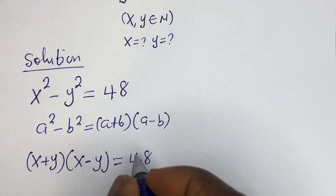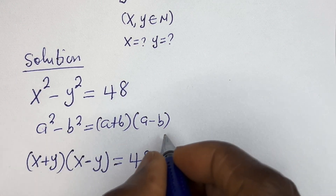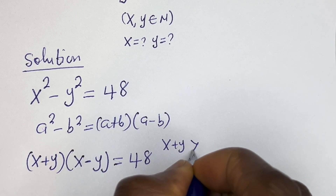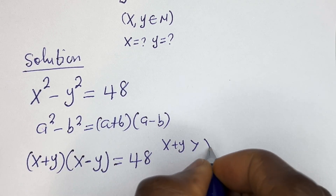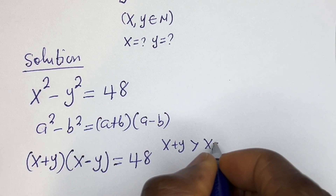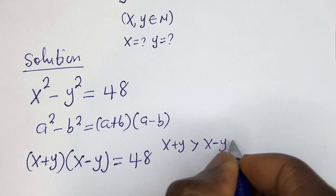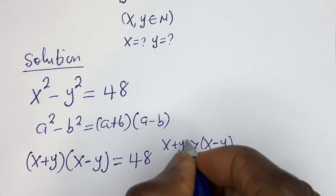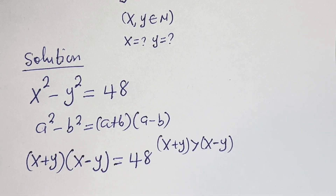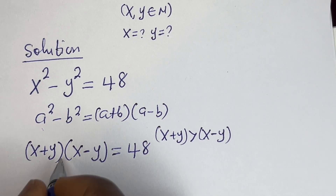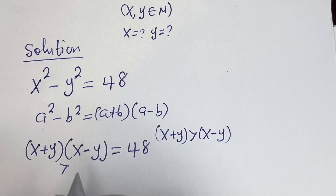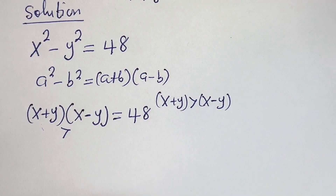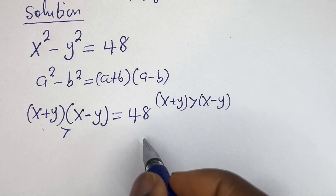Now take note that S plus Y is greater than S minus Y. Therefore, the first factor must be greater than the second factor. So we need to look for the factor pairs of 48 in this format.